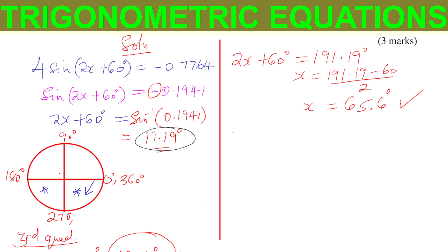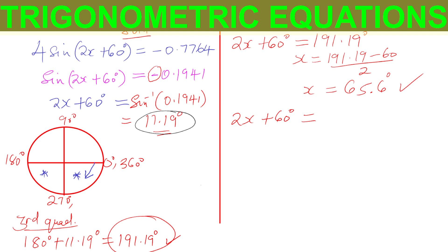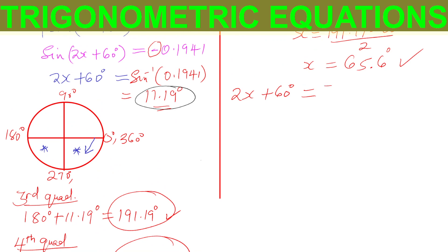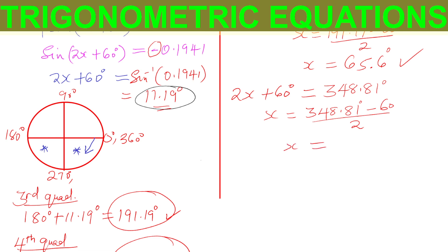For the second angle: 2x + 60° = 348.81°. So x equals (348.81 − 60) ÷ 2, which gives 144.4 degrees. That is the second value of x.